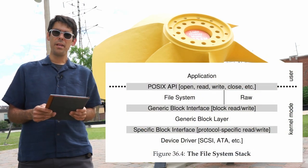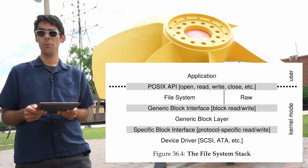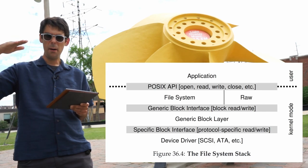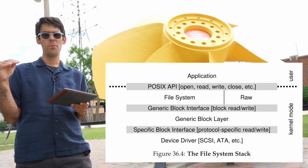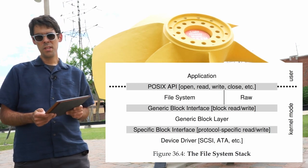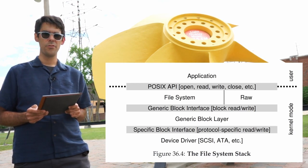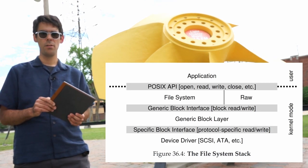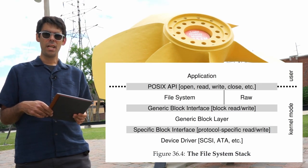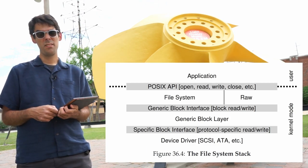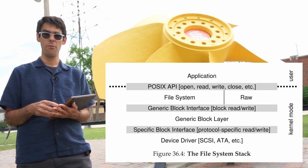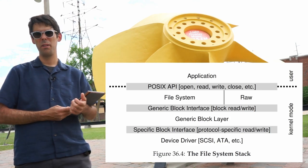A couple of things to note about this diagram: the amount of code in the operating system increases as you move down. Applications have a lot of code but that's not part of the OS. File system code is tiny compared to device driver code. The statistic our textbook cites is that 70% of the Linux kernel is device drivers — a reference from almost 20 years ago, but likely still true. As of 2020, the Linux kernel had 27.8 million lines of code. 70% of that is about 19 million lines — just device drivers in the operating system.